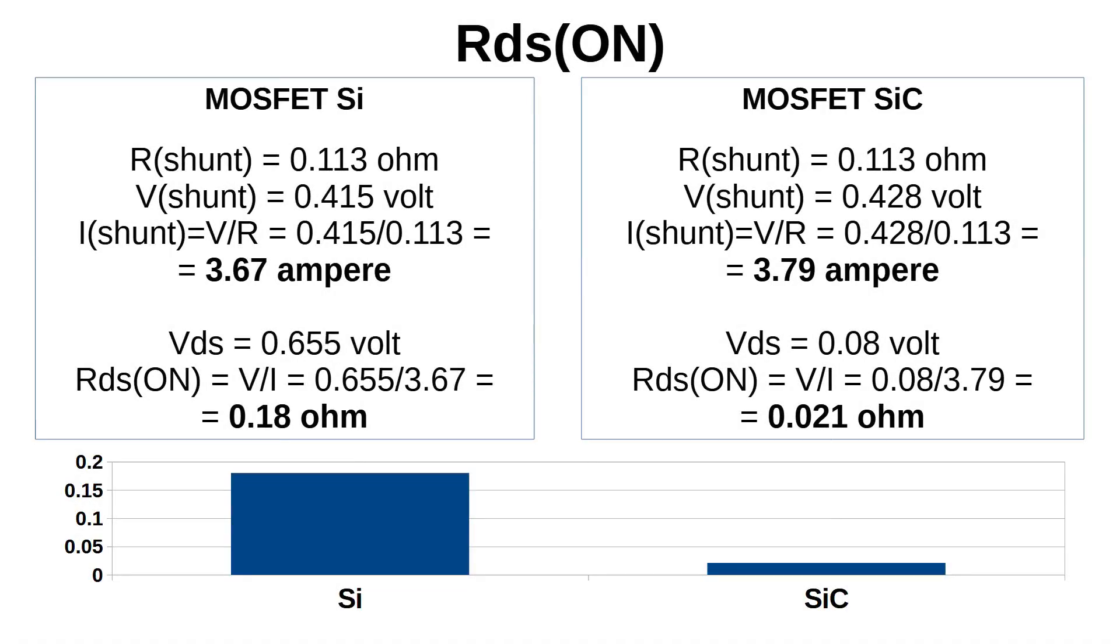Ohm's law allows one to determine the current passing across the shunt resistor and the drain source channel by knowing their exact values. Once more, applying Ohm's law, the RDS(on) value can be found by measuring the voltage across the drain source channel. Though the two devices differ in only a few tenths of an Ohm, this is vital in power applications aiming at maximum system efficiency.